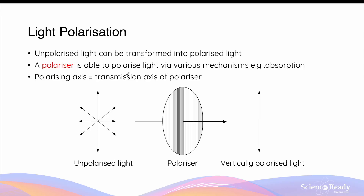We'll discuss polarisation using light for the remainder of this video. Unpolarised light can be transformed into polarised light using a polariser. A polariser is able to transform unpolarised light with many different axes of polarisation into a single axis of polarisation via various mechanisms. One such mechanism is through the absorption of light with unwanted axes of polarisation. The polarising axis of the light that passes through a polariser is always the same as the transmission axis of the polariser. For example, the transmission axis of this polariser is vertically orientated, which causes the polarising axis of the polarised light to also be vertically orientated.